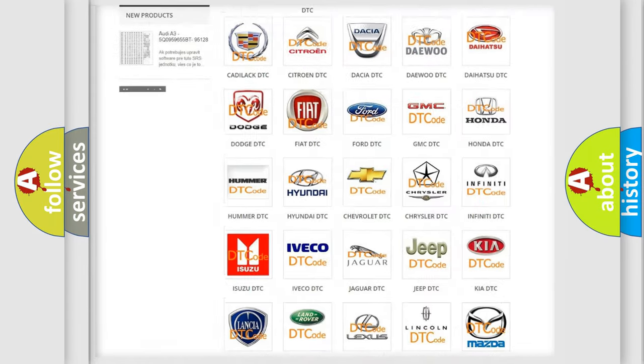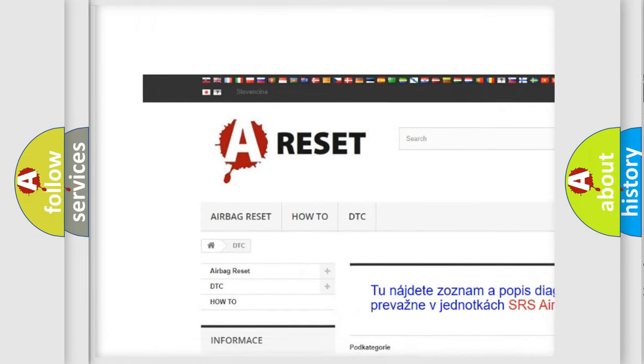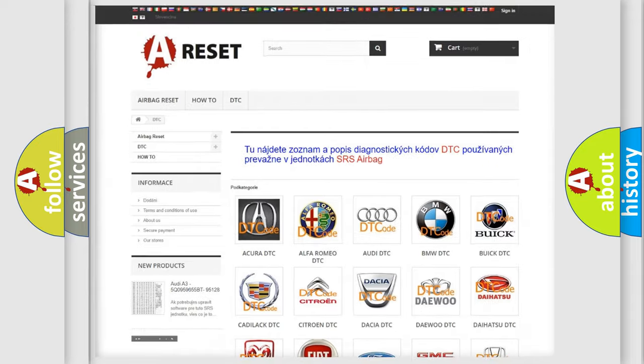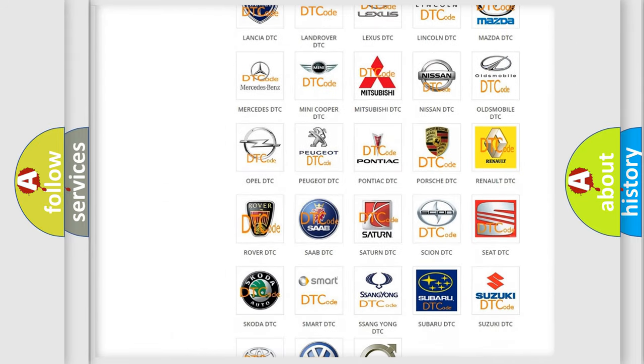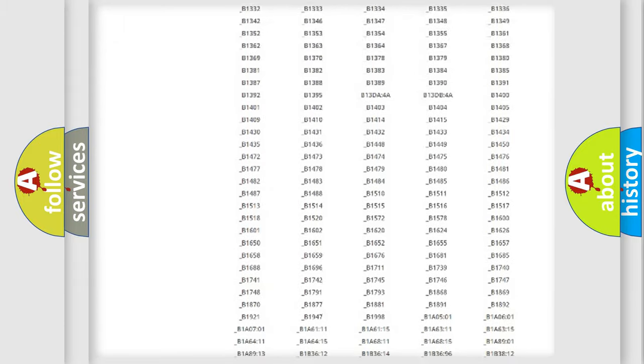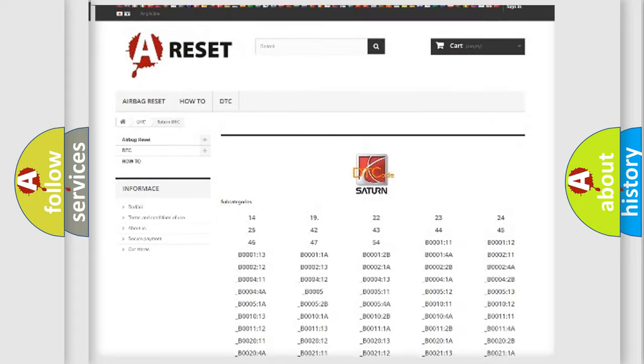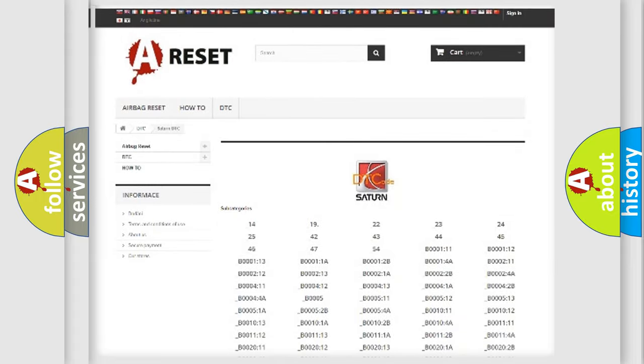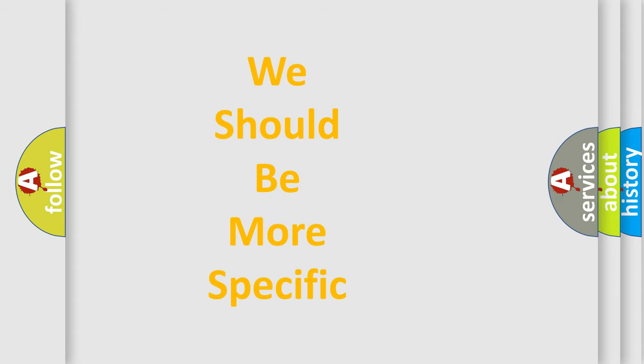Our website airbagreset.sk produces useful videos for you. You do not have to go through the OBD2 protocol anymore to know how to troubleshoot any car breakdown. You will find all the diagnostic codes that can be diagnosed in Saturn vehicles, and many other useful things. The following demonstration will help you look into the world of software for car control units.